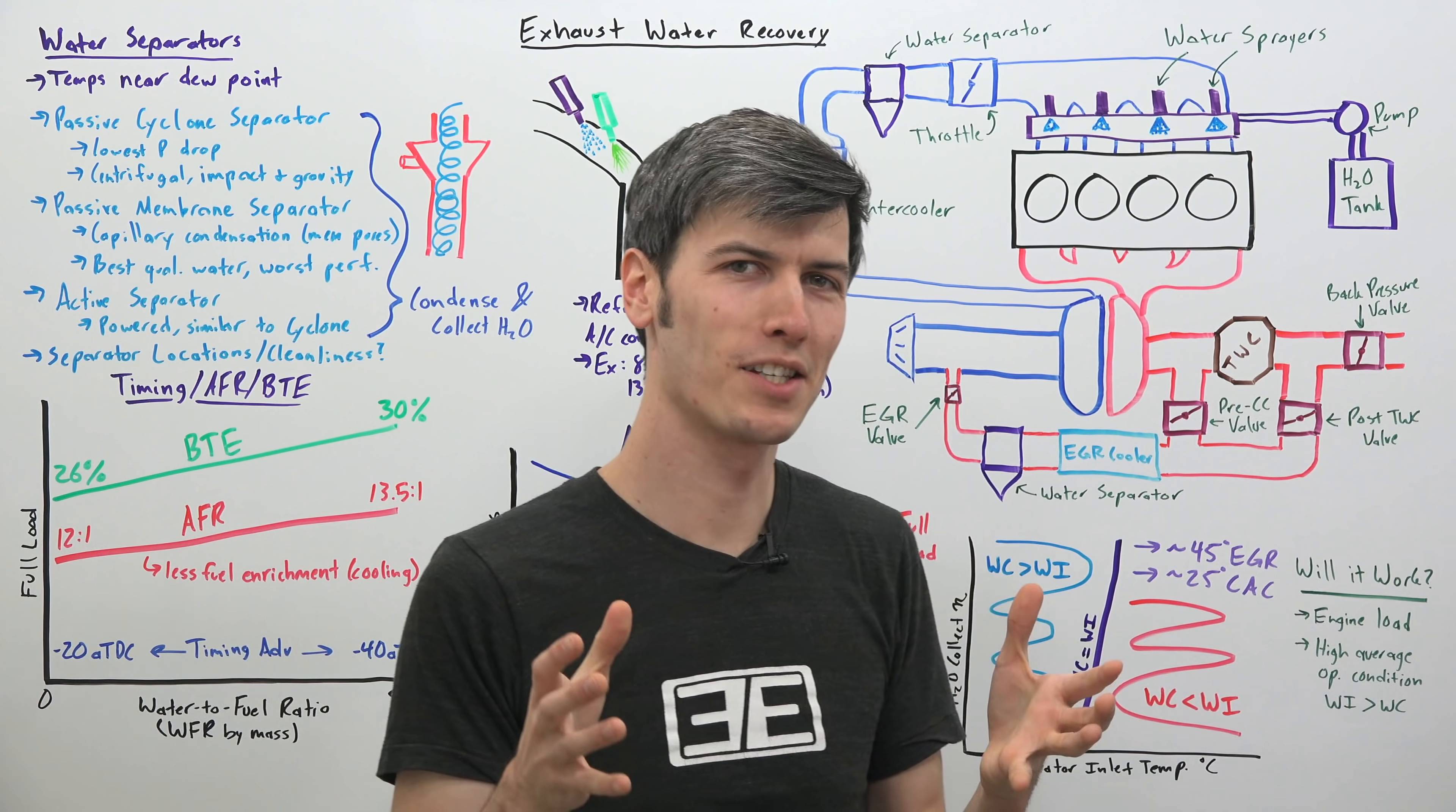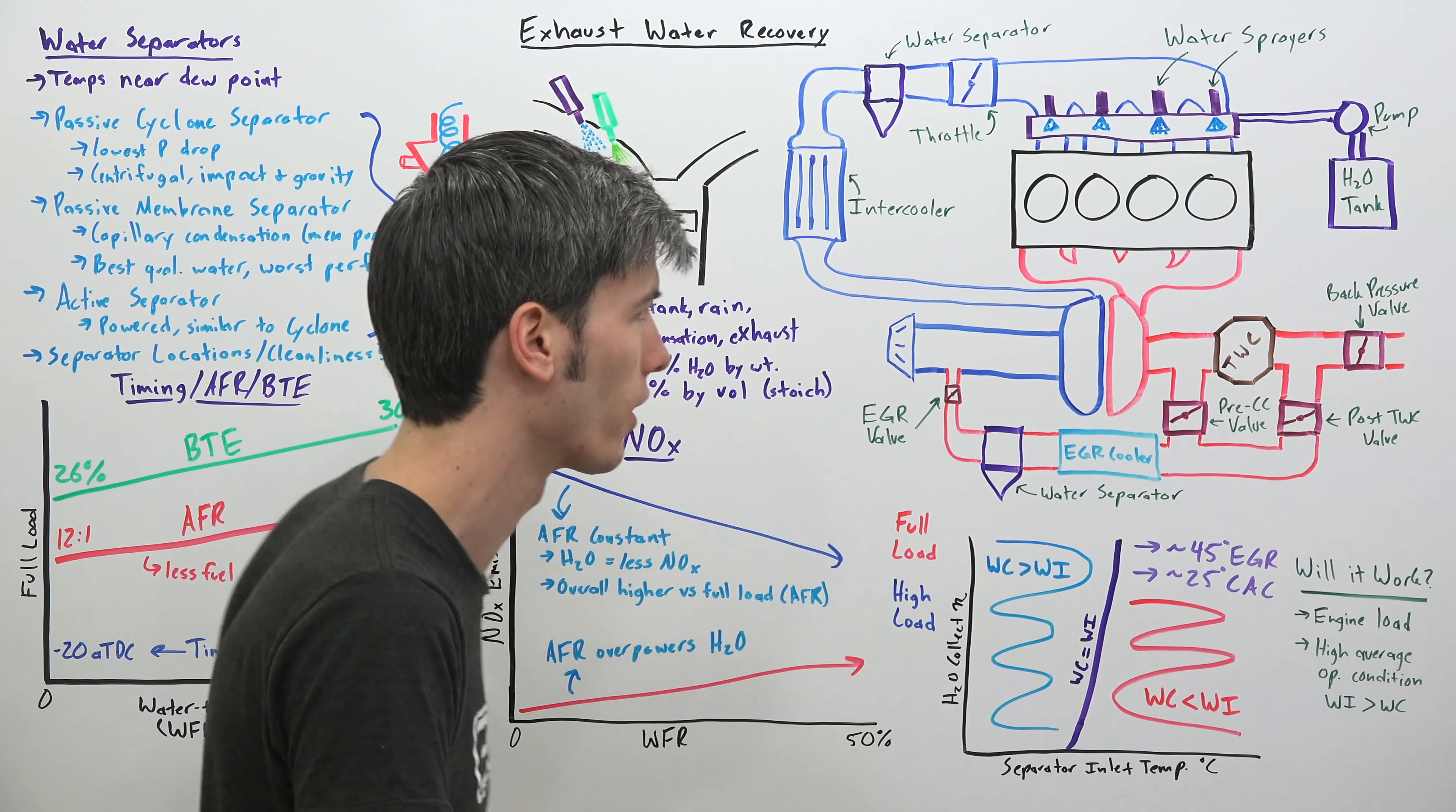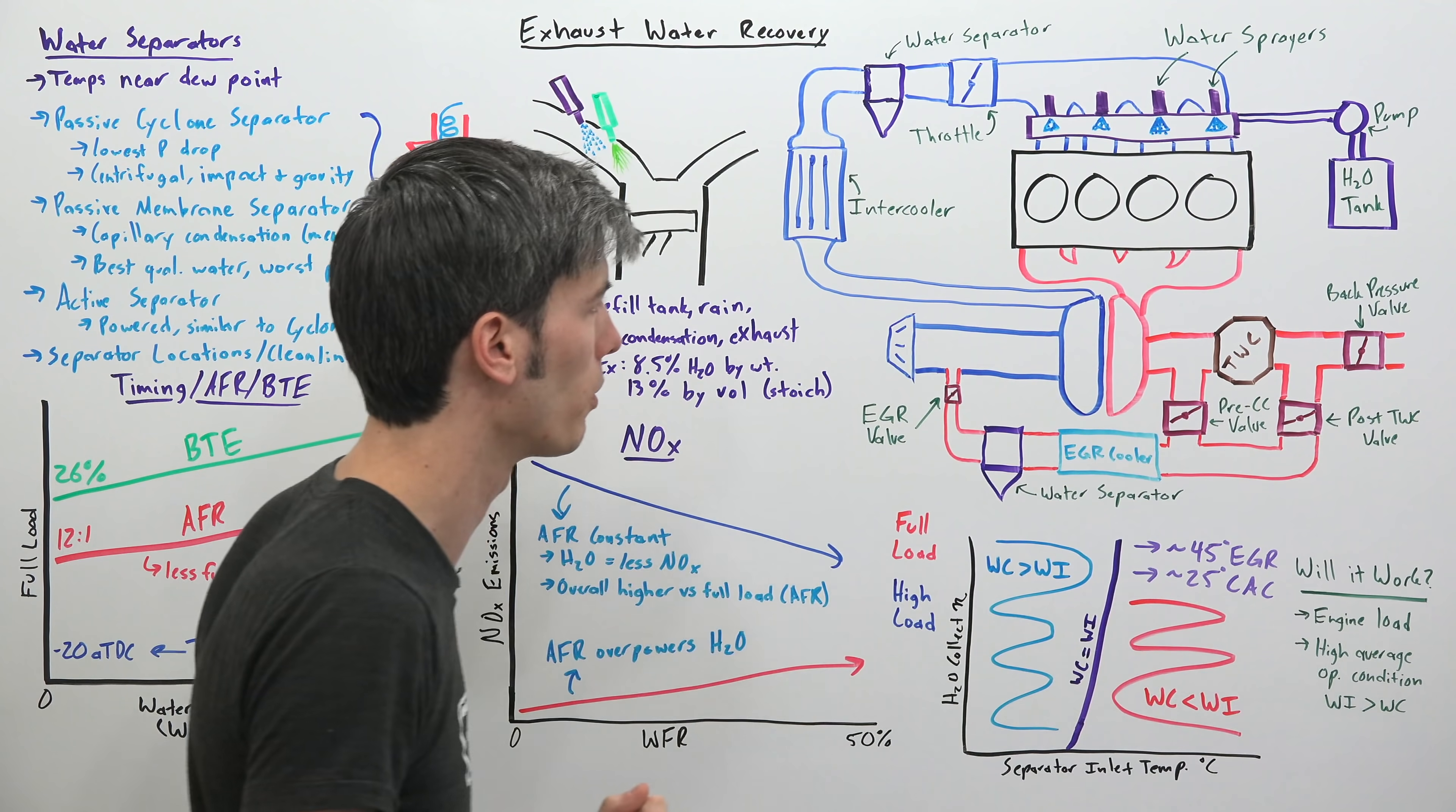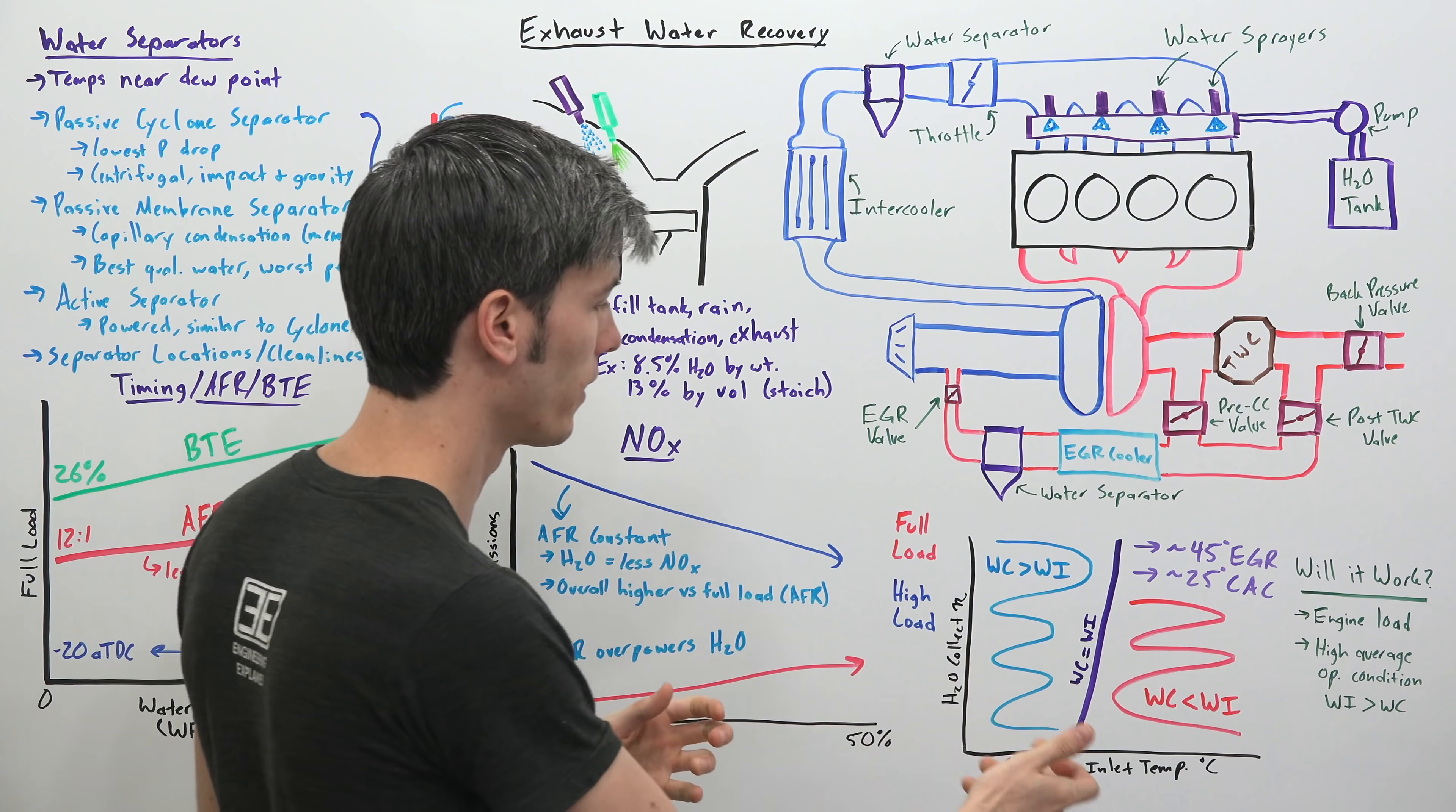So the big question, can the system actually sustain itself? So what you need to happen here is for the potential amount of water that could be collected to be greater than the amount of water that you're actually injecting. So if you have excess that's no problem. There are solutions for it. You could have a bypass around your water separator. You could send more just straight out the exhaust rather than rerouting it. There are ways to deal with excess water. But if you're not getting enough water versus how much you're injecting then you have a problem.